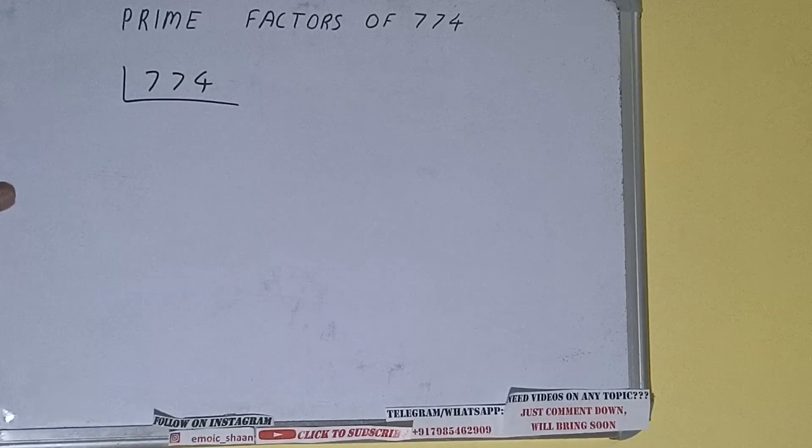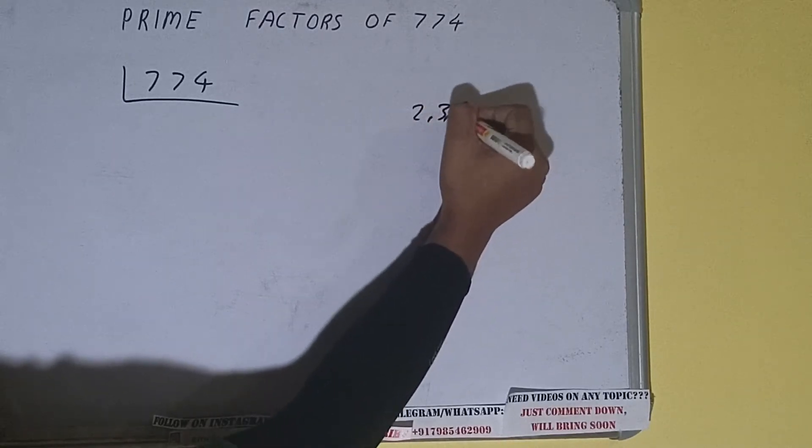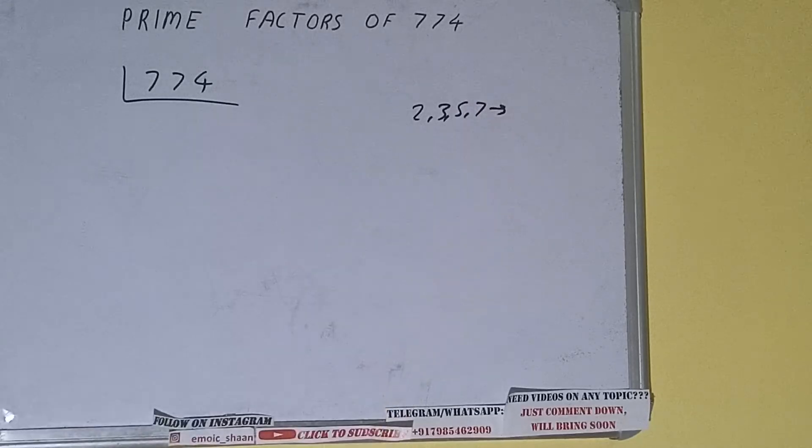The next thing we need to know about is what are prime numbers. So prime numbers are numbers that are divisible by 1 and the number itself, like 2, 3, 5, 7, and so on. Alright.